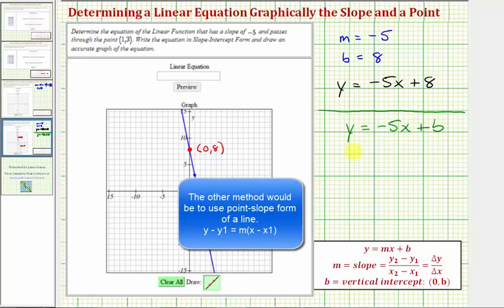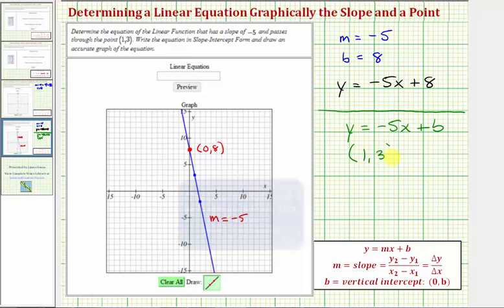To find the y-intercept, we use the point (1, 3) to find b. Substitute 1 for x and 3 for y: 3 = -5(1) + b. So 3 = -5 + b. Add five to both sides: b = 8, just as we found graphically.